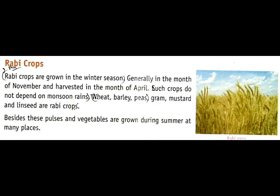The next example is Rabi crops. Rabi crops are sown after the monsoon season, at the start of winter season in November, and they are cut in March. Examples of Rabi crops are wheat, gram, peas, and mustard. Rabi crops generally do not need as many monsoon rains as Kharif crops, which mainly depend on monsoon rains.